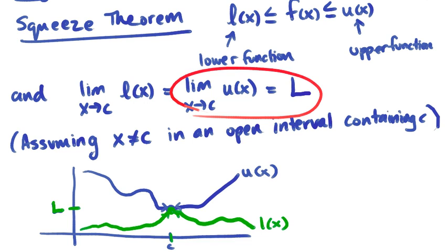Now our function, however our function works, sits in between the upper function and the lower function. The squeeze theorem states that if we have that, our limit needs to be L for our f of x function because it's squished in between these other two functions.